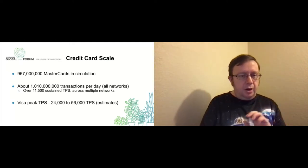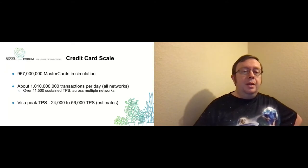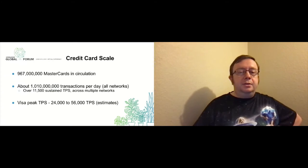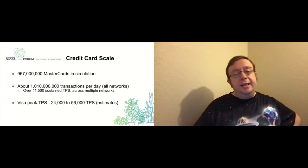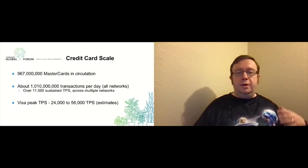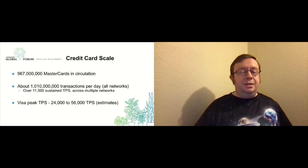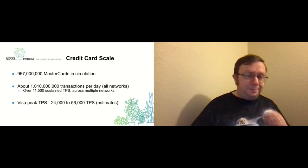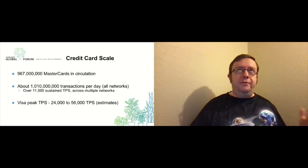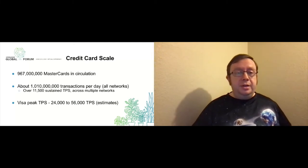The peak TPS that Visa advertises is between 24,000 and 56,000 transactions per second — and that's just for Visa. Throw in Mastercard, Discover, and all the other card networks and you get quite a large transactions-per-second number. And if you wanted to support high-frequency trading or finance, it can get even higher than that. So how does Ethereum compare to these scales?